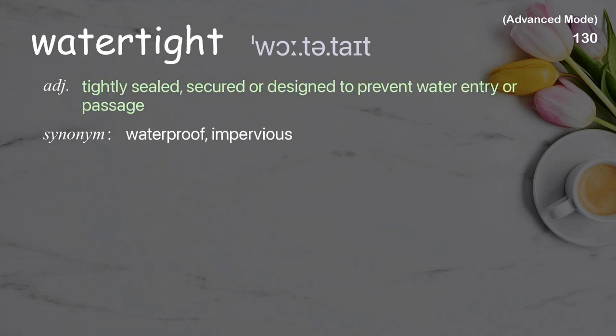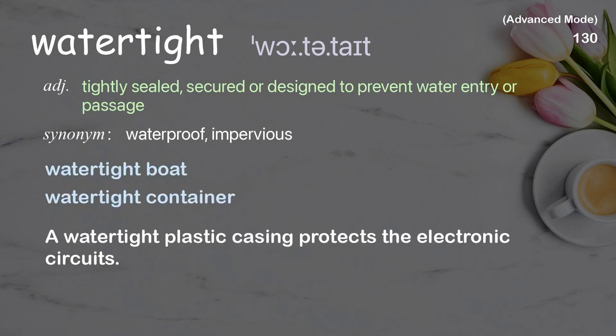Watertight: tightly sealed, secured or designed to prevent water entry or passage. Examples: watertight boat, watertight container. A watertight plastic casing protects the electronic circuits.